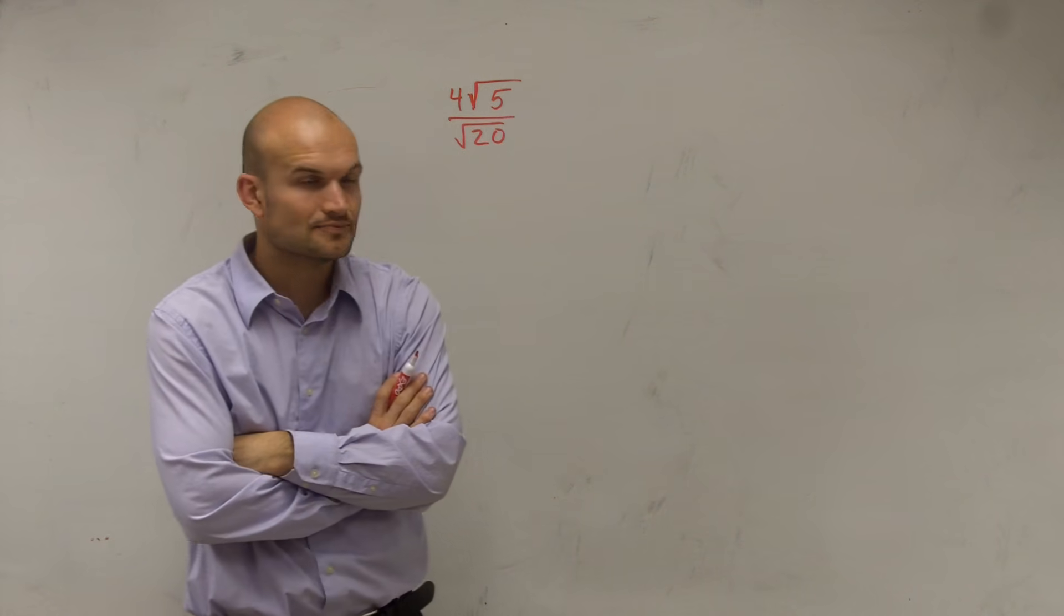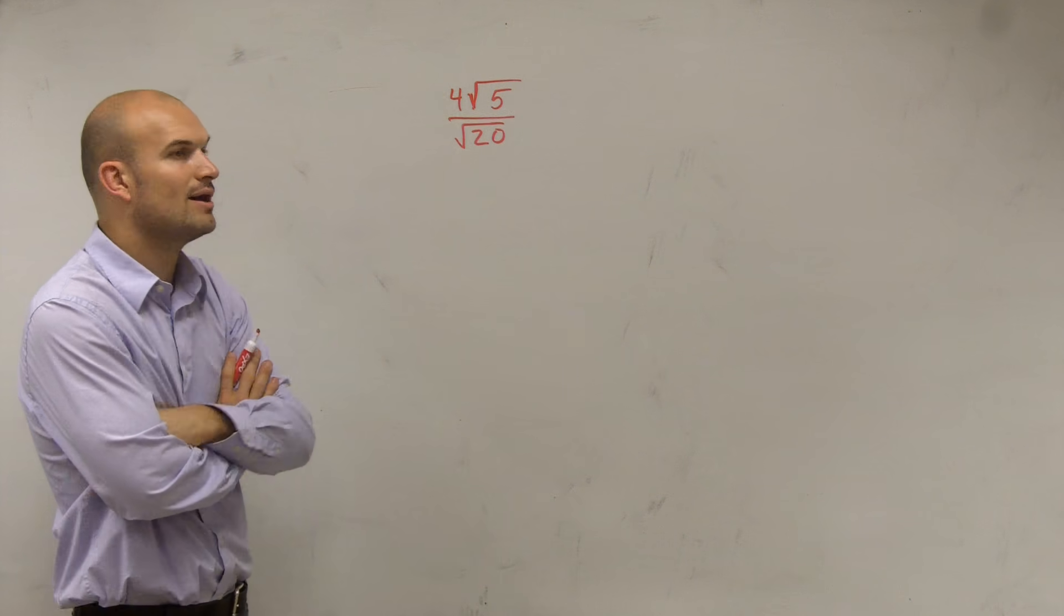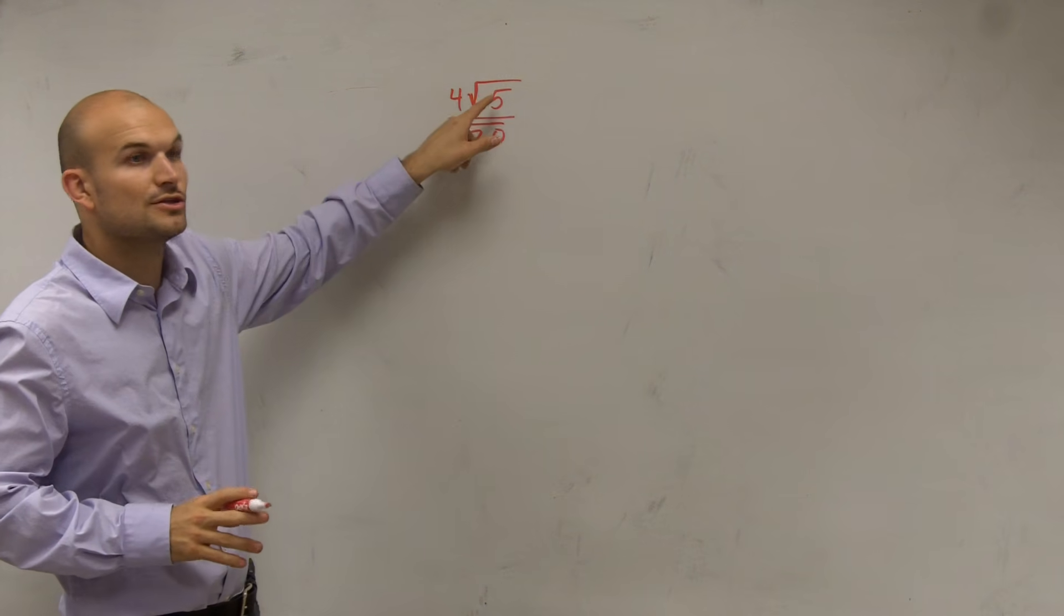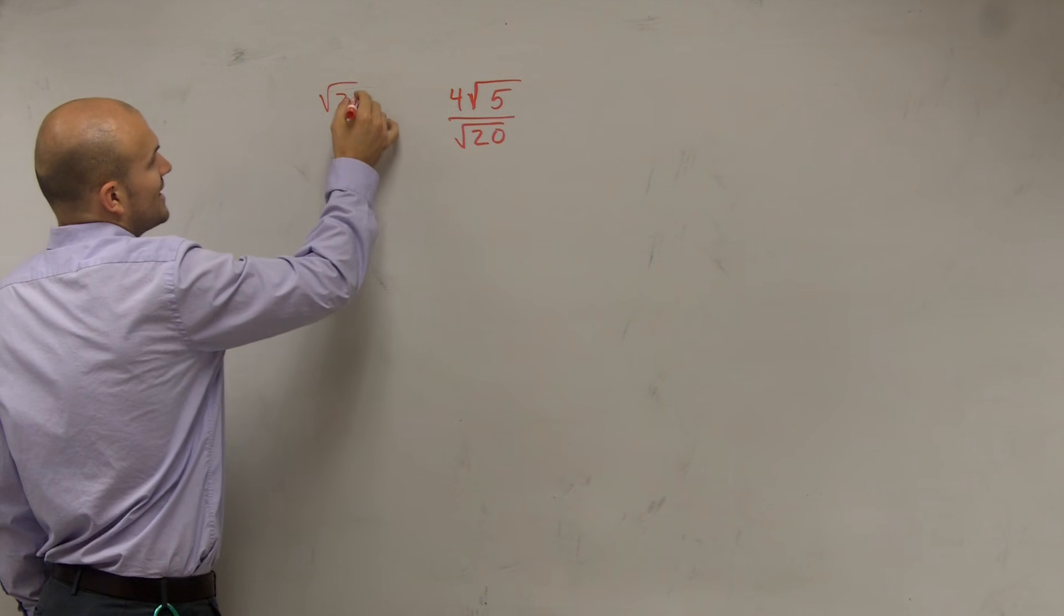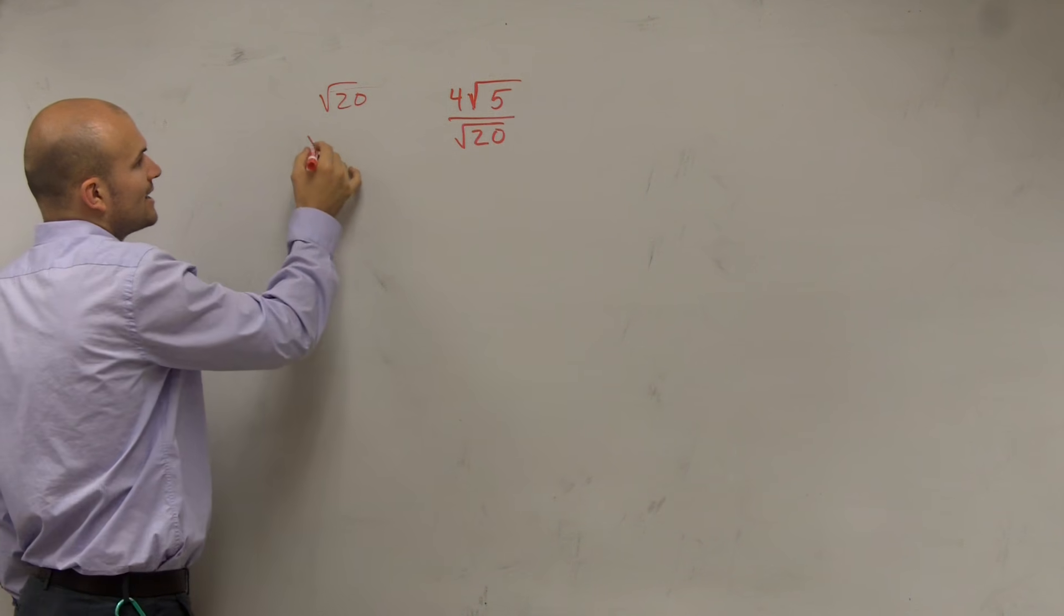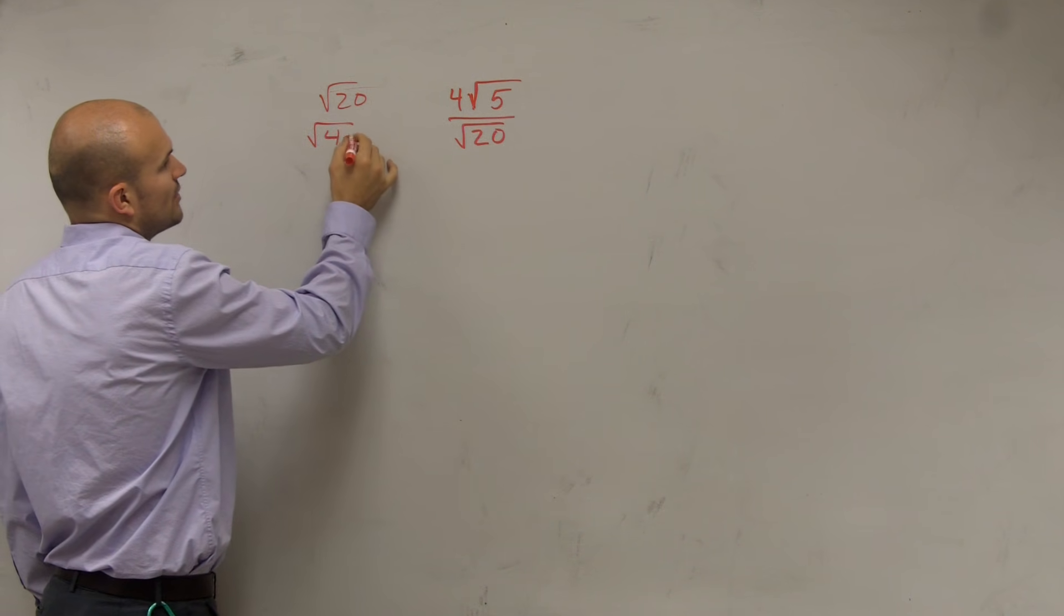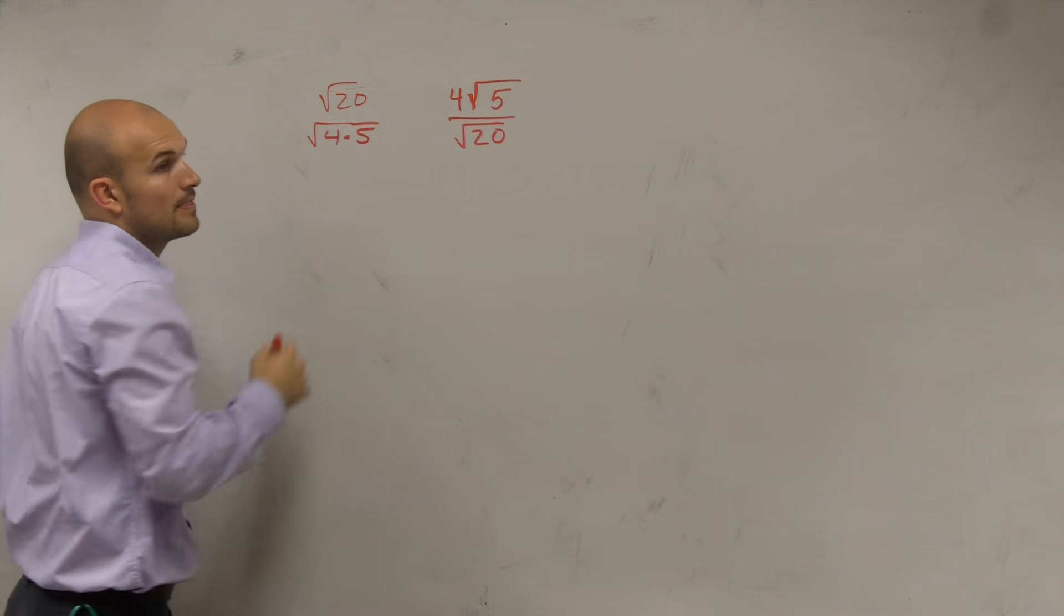So what I'm going to want to do is I want to see, can I simplify either the square root of 5 or the square root of 20? And let's kind of go off to the side. Well, I can simplify the square root of 20. I can rewrite that as the square root of 4 times 5, right?